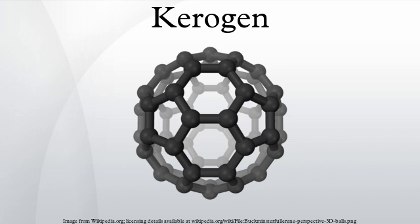Composition: as kerogen is a mixture of organic material rather than a specific chemical, it cannot be given a chemical formula. Indeed, its chemical composition can vary distinctively from sample to sample. Kerogen from the Green River Formation Oil Shale Deposit of Western North America contains elements in the proportions: carbon-215, hydrogen-330, oxygen-12, nitrogen-5, sulfur-1.